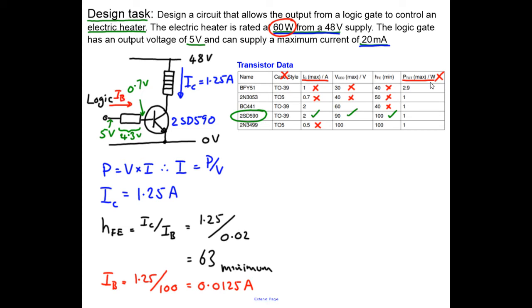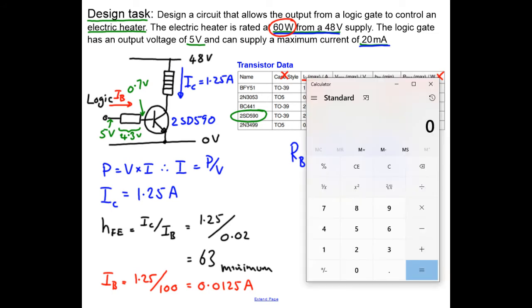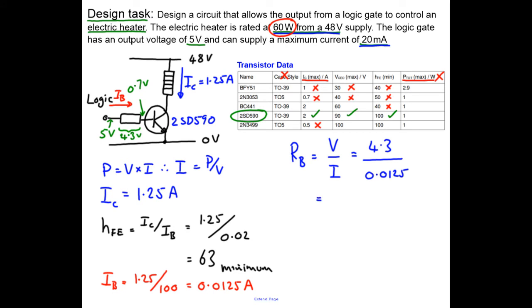Okay, so now we can work out the value of the base resistor. So the resistance of the base resistor is the voltage divided by the current. And the voltage in this case is 4.3 because it's the voltage drop across the resistor. And the current is 0.0125. So we get our windows calculator back. And we go 4.3 divided by 0.0125. And that comes out to be 344. And the units of course are ohms. So therefore we'll use the next lowest value so we make sure we have plenty of current to saturate the transistor and make sure it's fully turned on. So we use 330 ohms as our base resistor. And that's the problem solved.